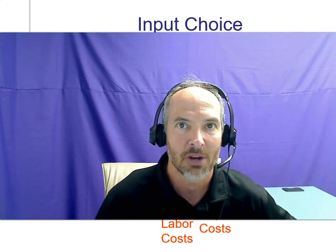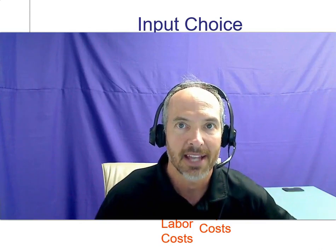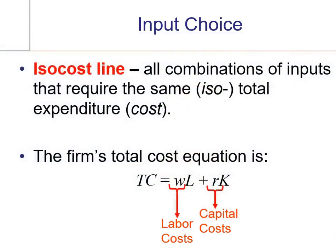But now the y-axis represents capital spending, capital goods, and the x-axis represents labor, or how many workers that you hire. So let's get to the definition then of isocost line. It's going to show all combinations of inputs that require the same amount of spending, or same cost.